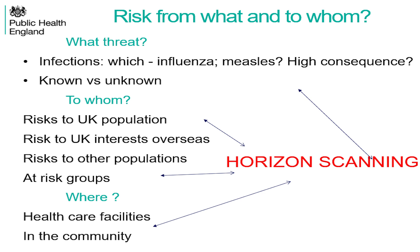We basically didn't do influenza — there are lots of people doing that — or measles. We were looking at high consequence infections, particularly new infections at the animal-human interface, and also unknown infections, which cause no end of problems. When we've got a diagnosis it makes it easier, but it's at the unknown stage where animals are sick and humans are sick that the risk assessment process is essential.